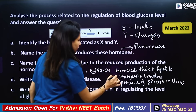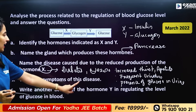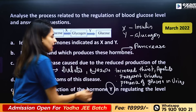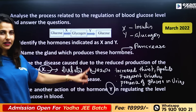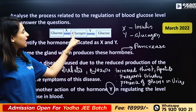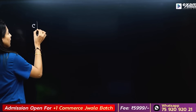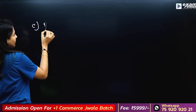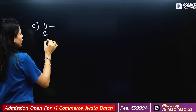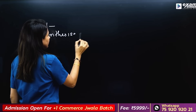Write another action of hormone Y in regulating the level of glucose in blood. The action of glucagon is converting glycogen to glucose — synthesis of glucose from stored glycogen.